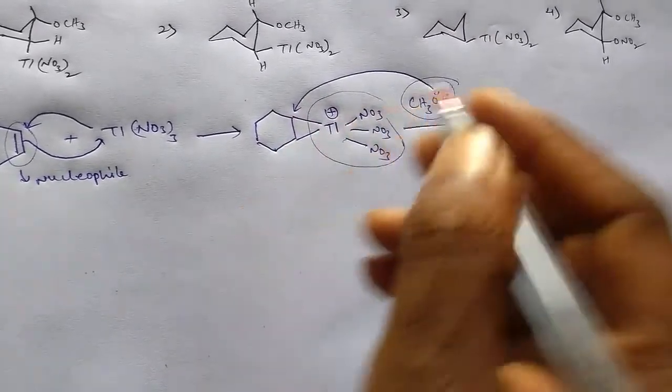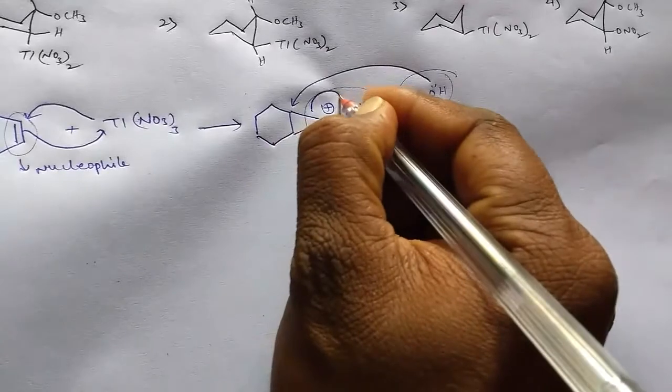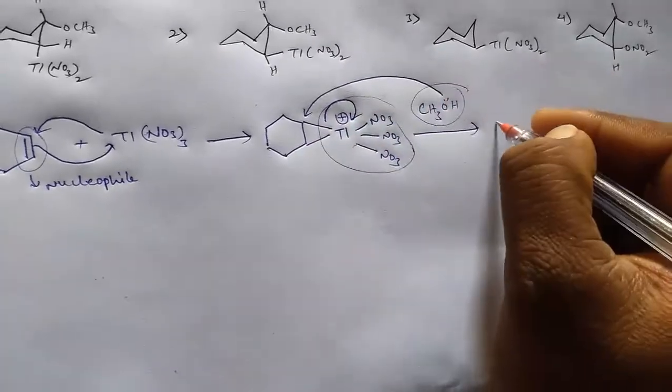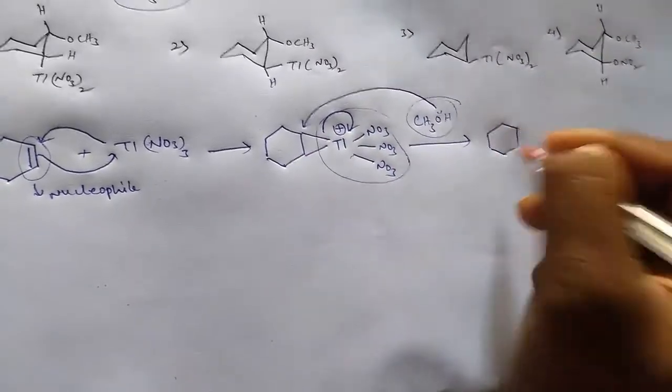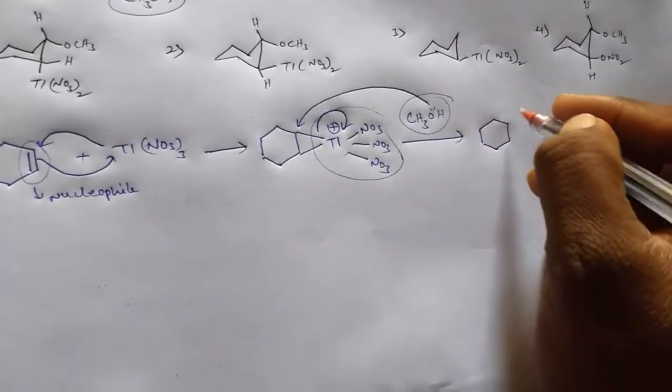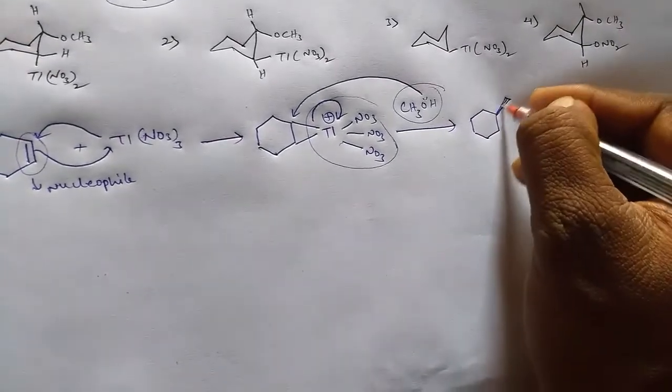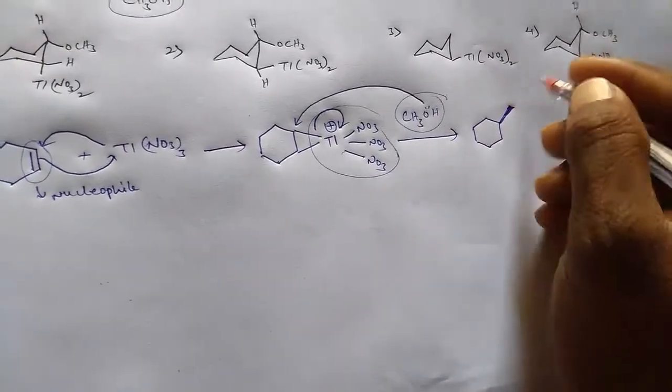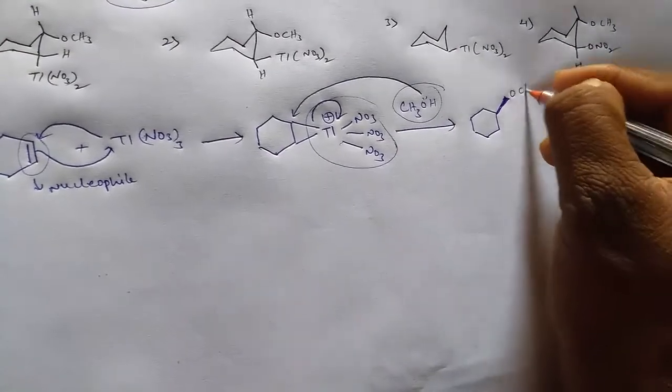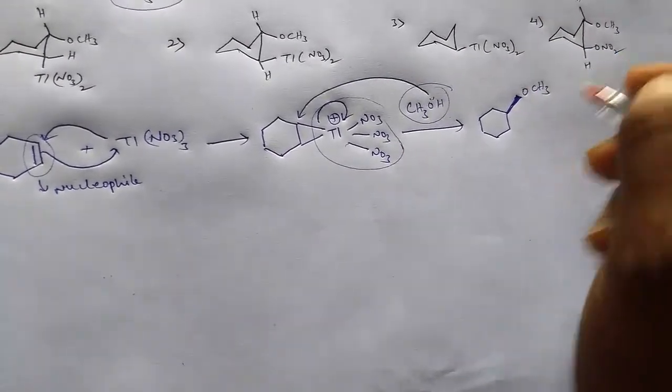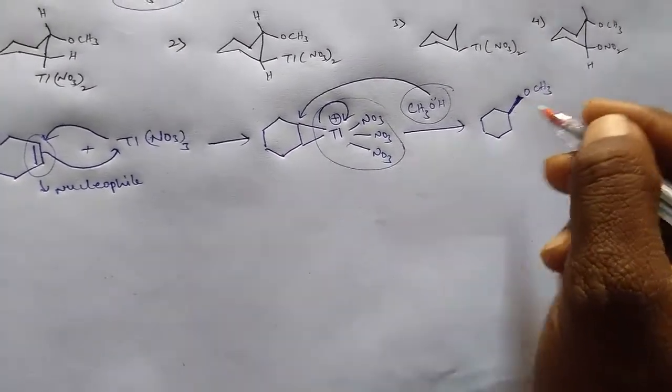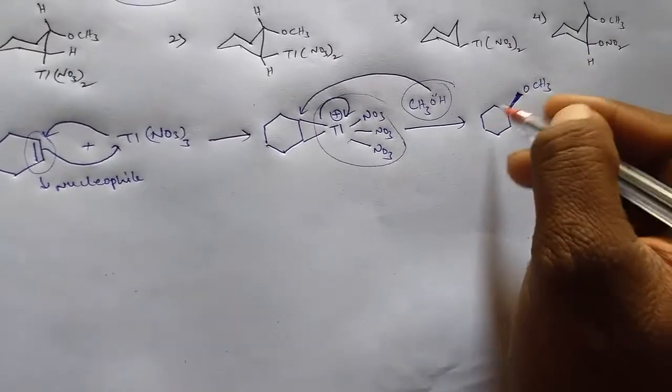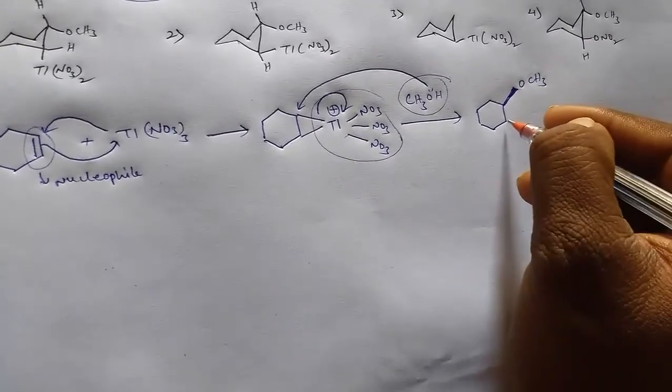So from that we can write, if we think thallium is axial and methoxy attacks from the top of this cyclohexene ring, then...